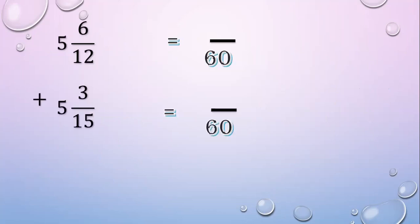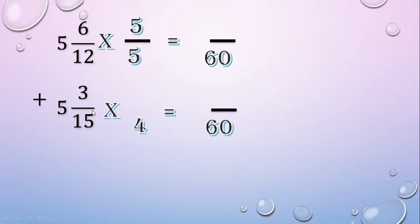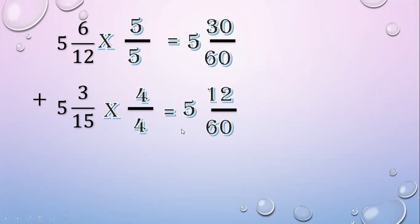Then change the denominator to 60. Think of a number to multiply 12 to make it 60 — that is 5. So multiply 5 over 5. In the second fraction, think of a number to multiply 15 to make it 60 — that is 4. So multiply 4 over 4. Multiply the numerators: 6 times 5 equals 30; 3 times 4 equals 12. Copy the denominator: 60.